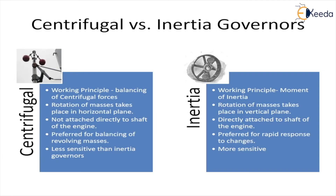In a quick comparison: centrifugal governors work on centrifugal forces, while inertia governors work on moment of inertia. In centrifugal governors, the masses rotate in the horizontal plane and are not directly attached to the shaft, making balancing of revolving masses easier, so they are more preferable. Inertia governors are more sensitive with rapid response, but have practical difficulty in balancing the revolving parts. Therefore, centrifugal governors are generally more preferred over inertia governors.